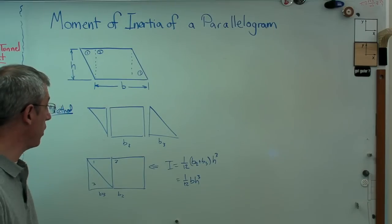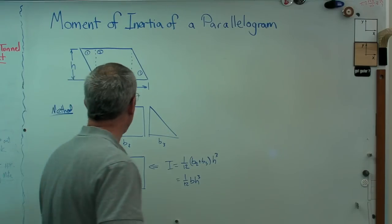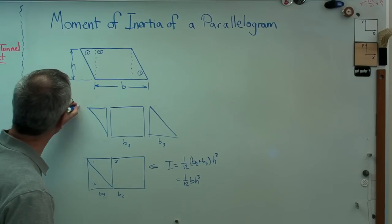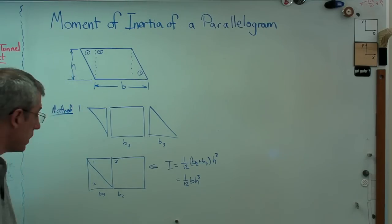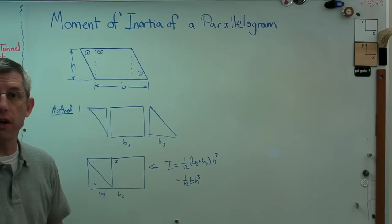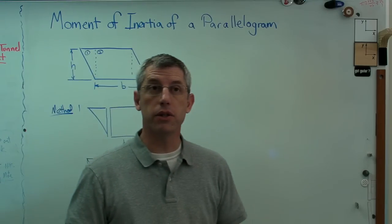Since those equal b, that's 1/12 bh cubed. So there it is, there's kind of a geometric argument. Now let's try this one more way. That was method one. Now let's go to method two.